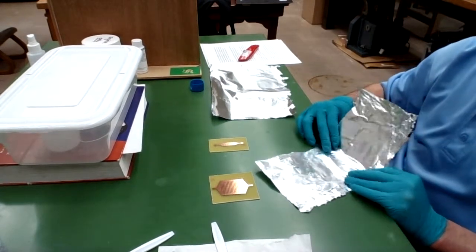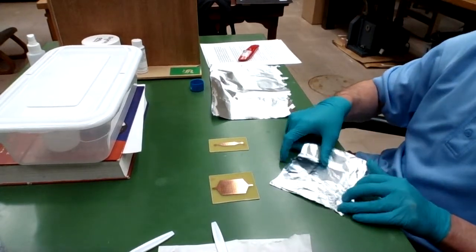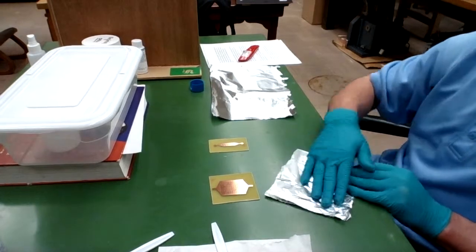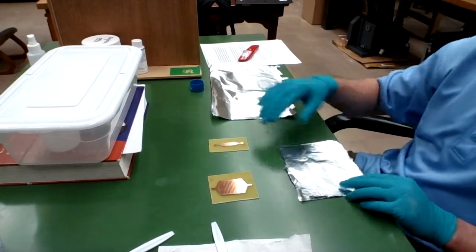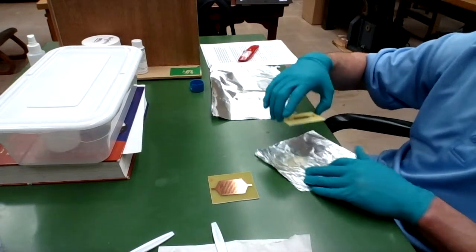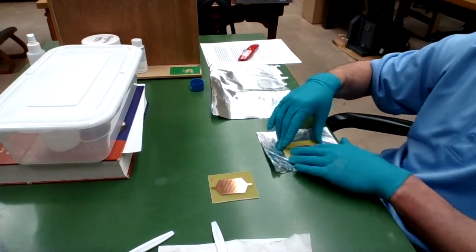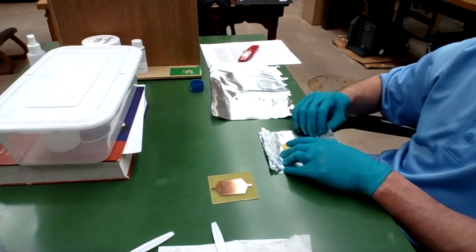So I'm just going to double the aluminum foil over so that in case part of it rips, it'll have two layers. Put my design, my PCB right there in the middle and just fold up the sides.